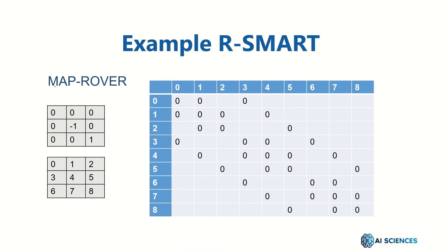Let's say the example is MapRover. You are new to this world, and this world consists of a grid. This grid has 9 states: state 0, state 1, state 2, state 3, state 4, state 5, 6, 7, and 8. The MapRover, which is basically the agent, can only move in four directions.